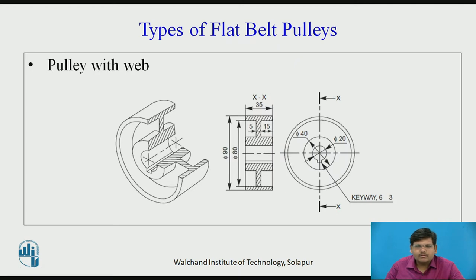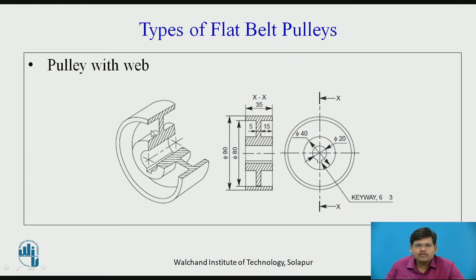Pulley with a web: when the diameter of the pulley is very small, the hub and the rim are connected by a thin plate which is called as the web. As you can see in the side view, the section lines indicate that there is filled material which supports the hub and the rim. To reduce the weight of this kind of pulley, holes are provided on this web surface so that the weight of the pulley is reduced and it can perform better for a particular application.